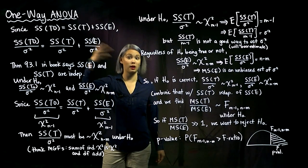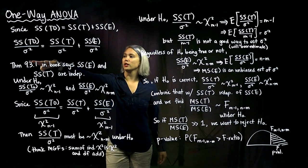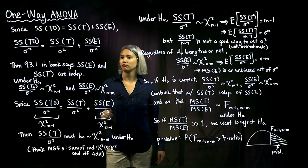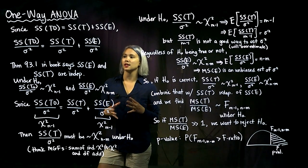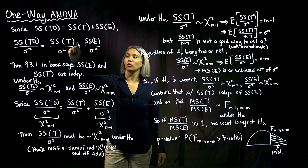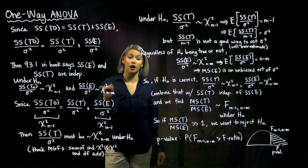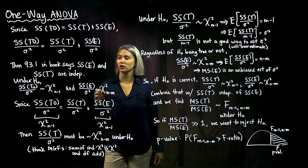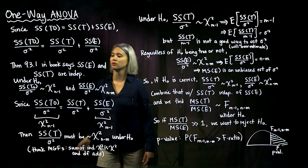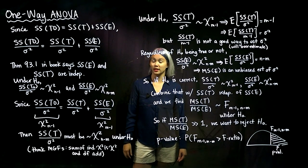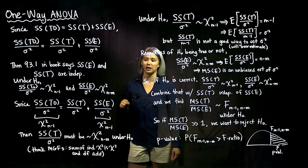We can divide by a constant all the way across, so we divide across by sigma-squared. If you look at your book, Theorem 9.3.1, it says that the treatment sum of squares and SSE are independent. If we look at this first piece and break that down, we're going to see that it's a chi-squared random variable with n minus 1 degrees of freedom.